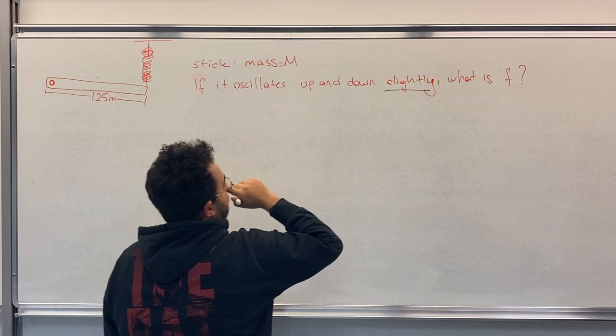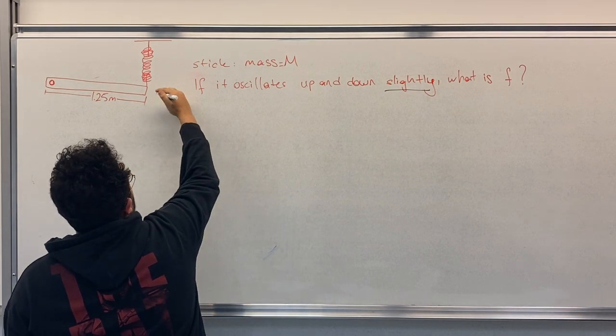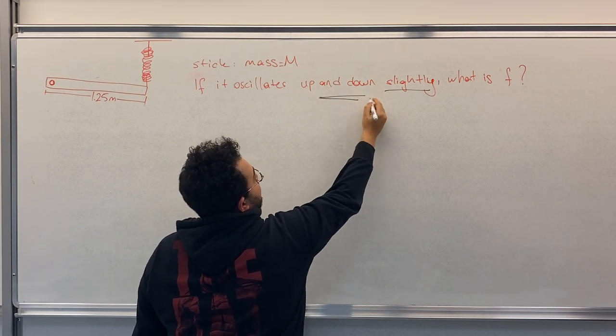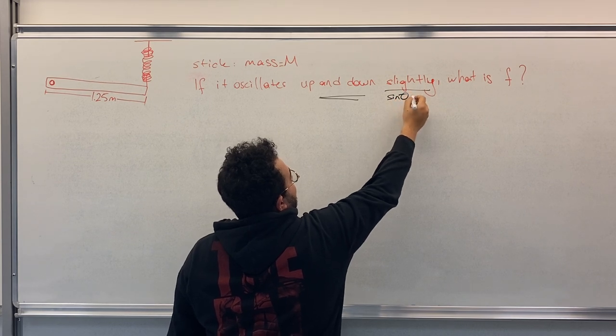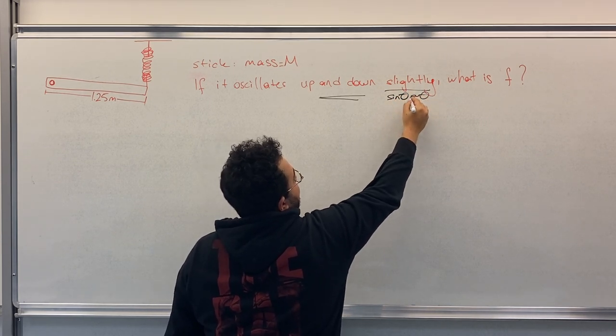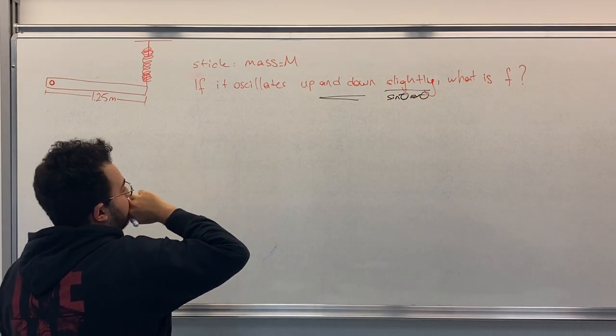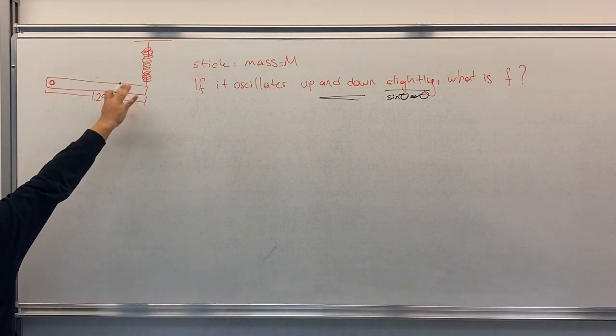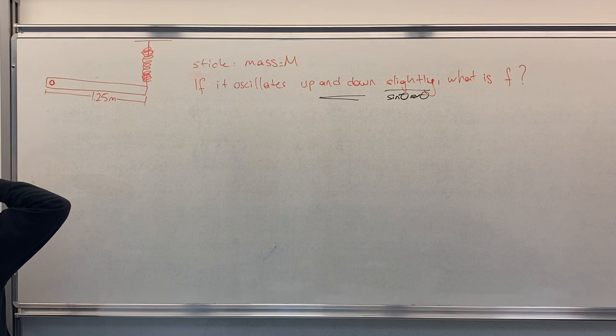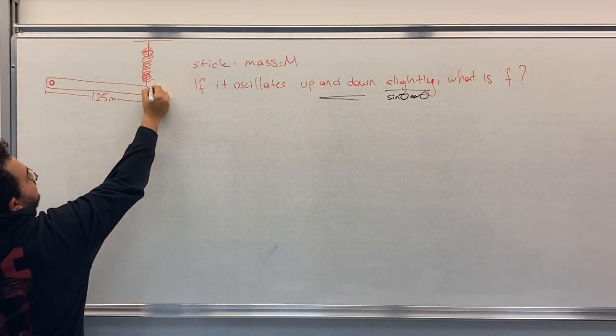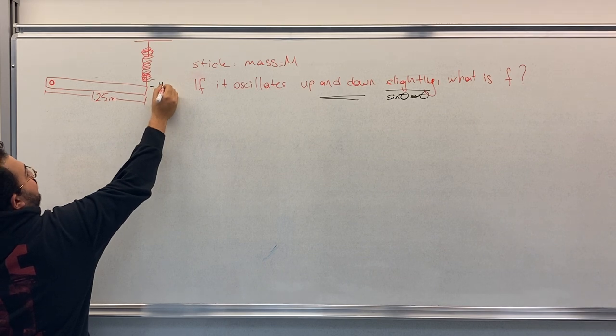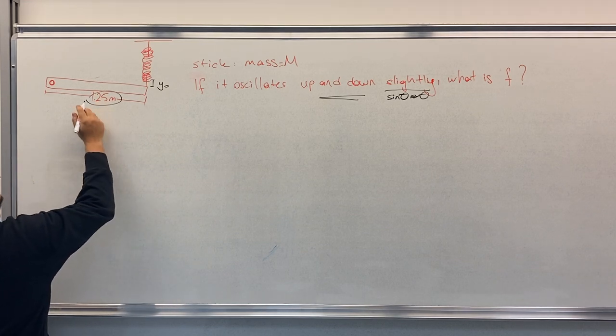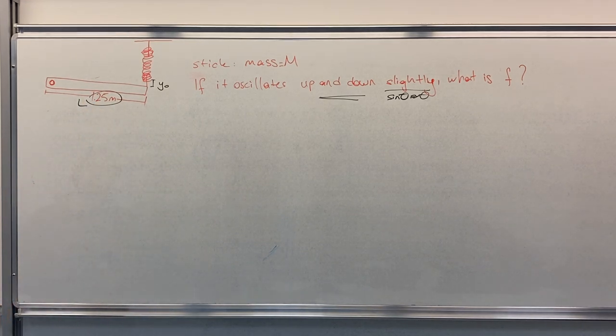The word slightly is important here because if you remember, since this oscillation happens in a small distance, we can say that sine theta approximately equals theta. So first of all, we can assume that this is the equilibrium state with a little displacement here. I will call this distance capital L.